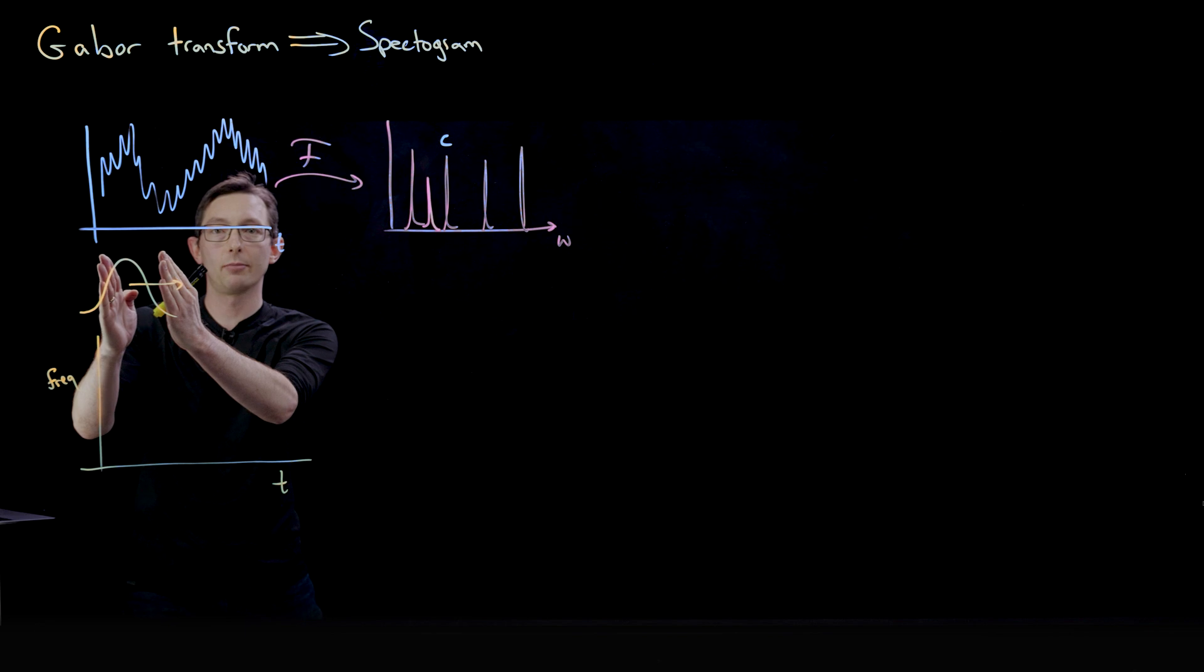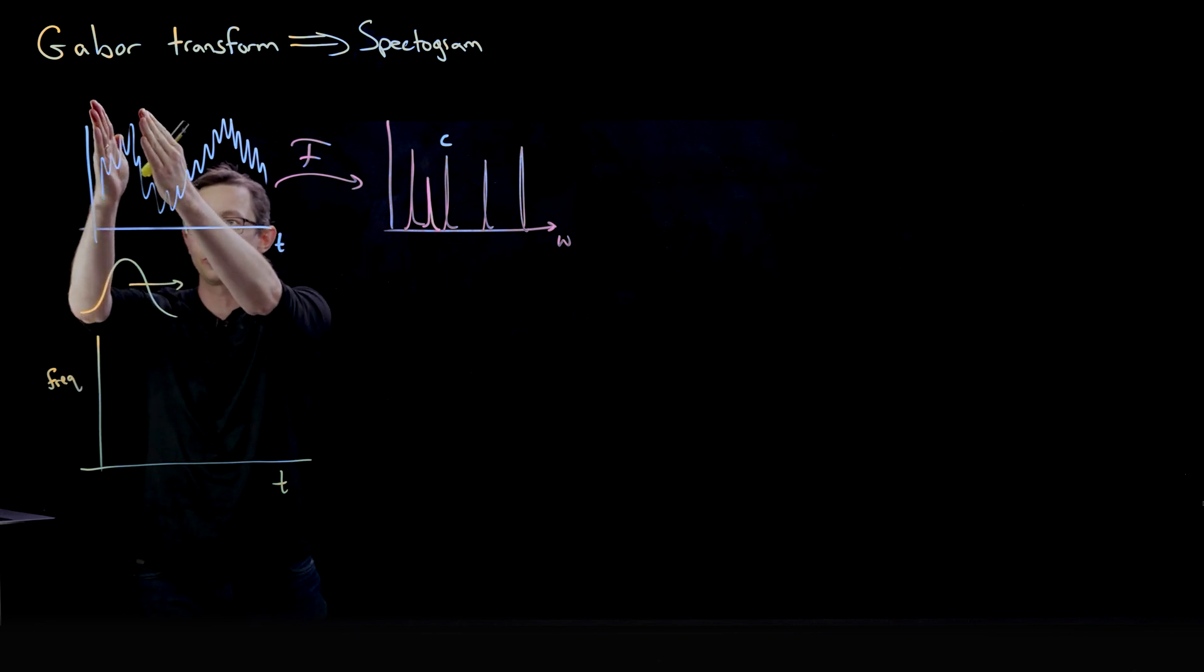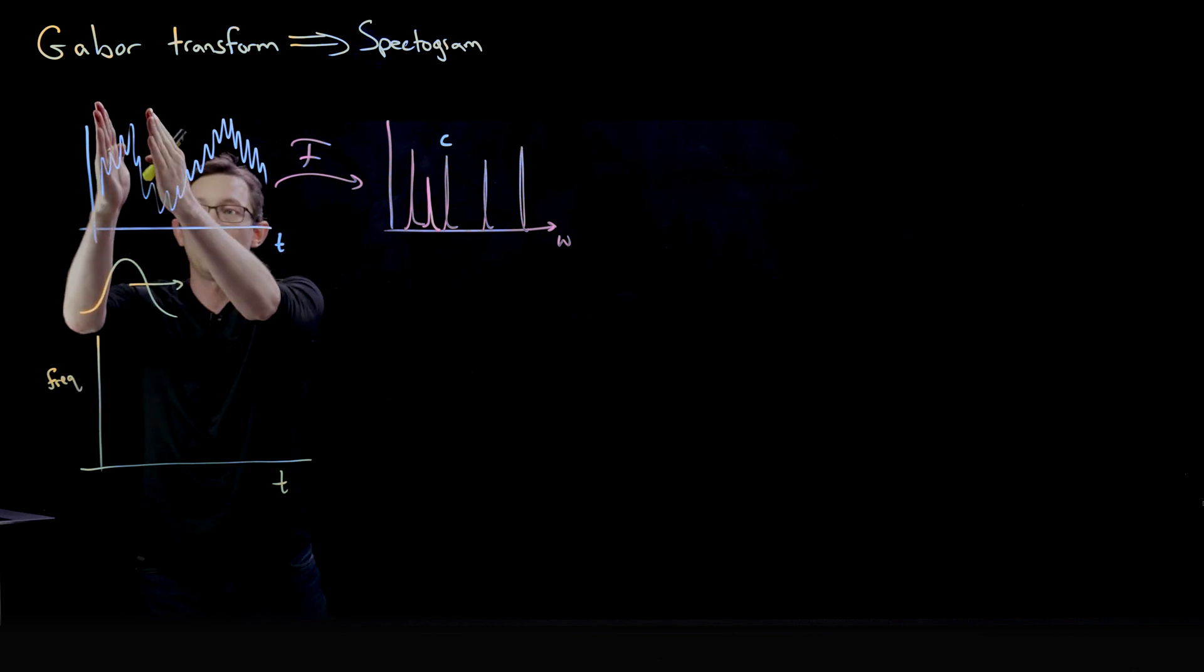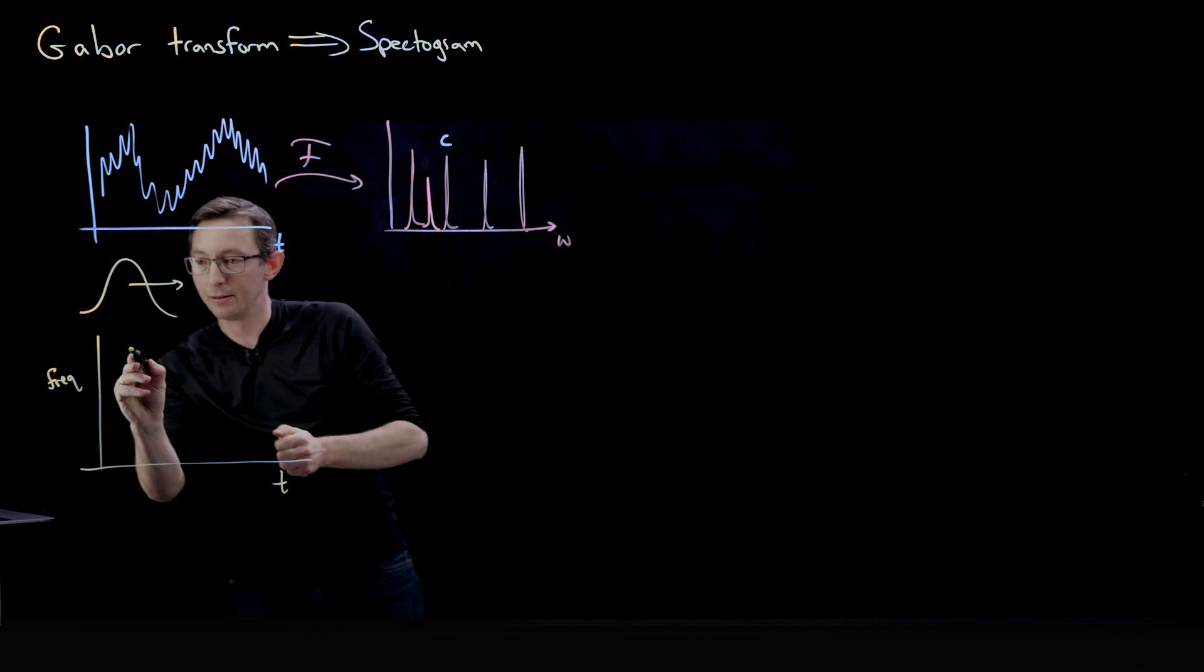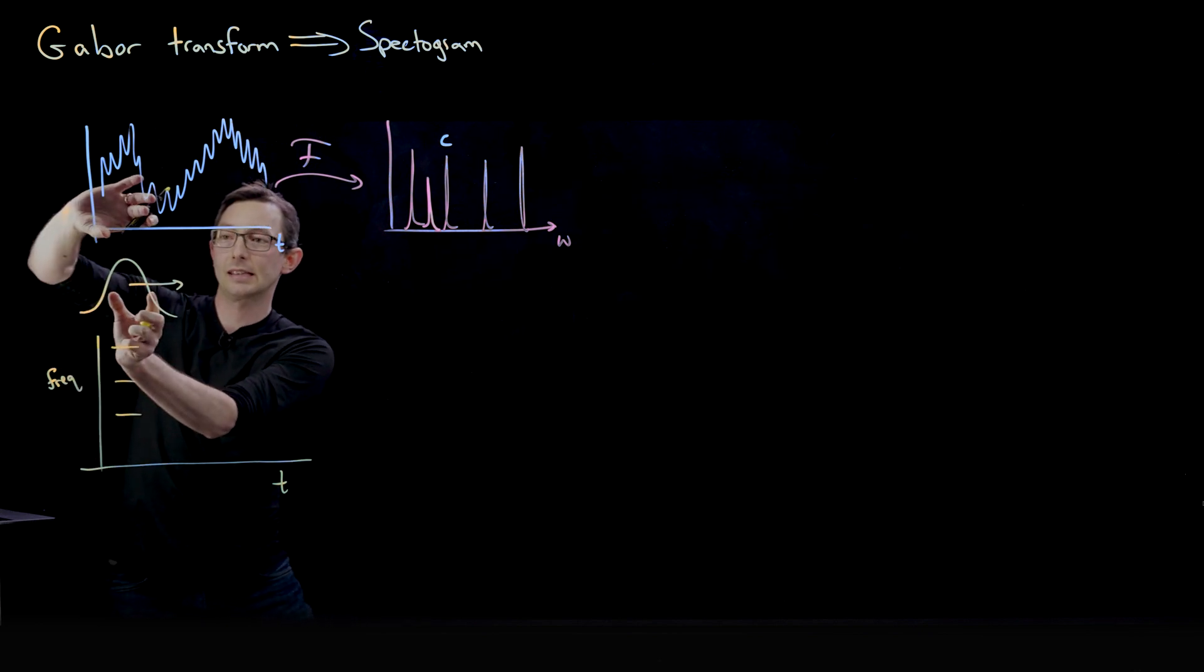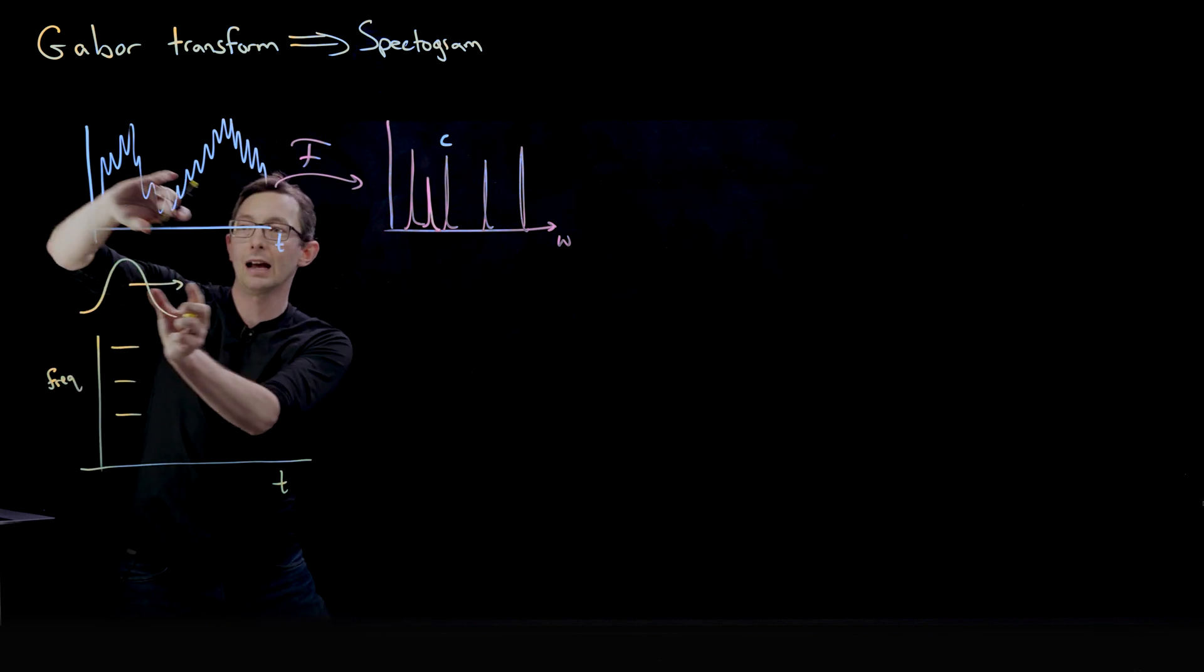For example, if I take this first Gabor window, I basically compute the Fourier transform of this little section of my data, and I get some, maybe these keys are being hit on the piano.